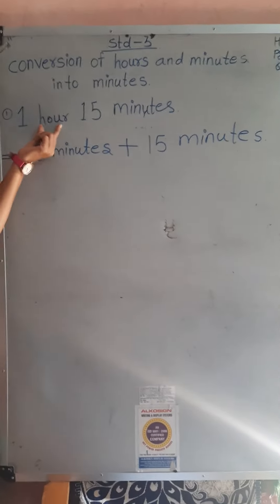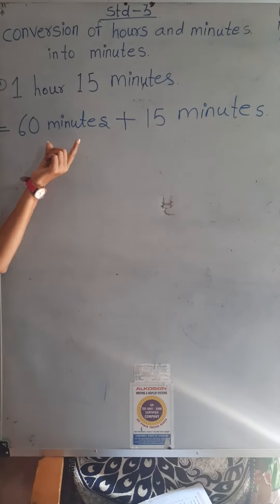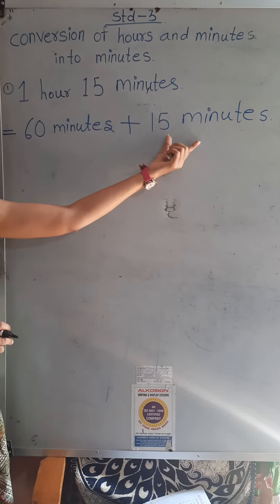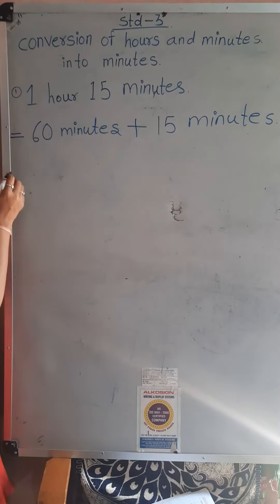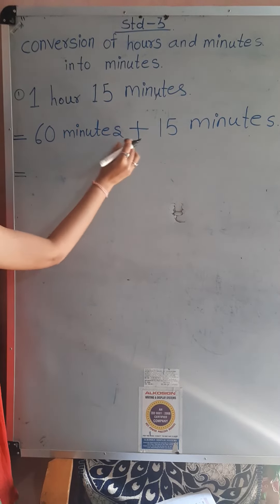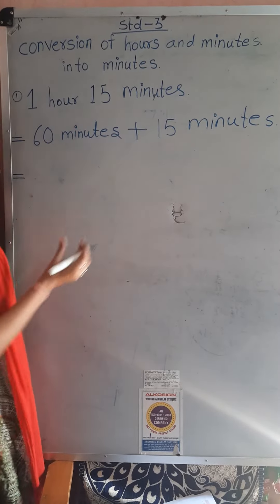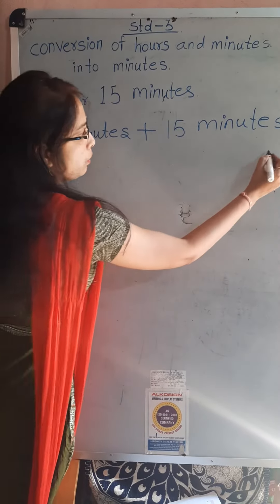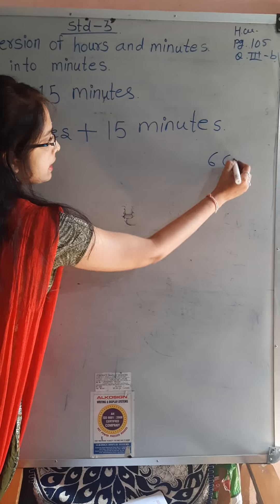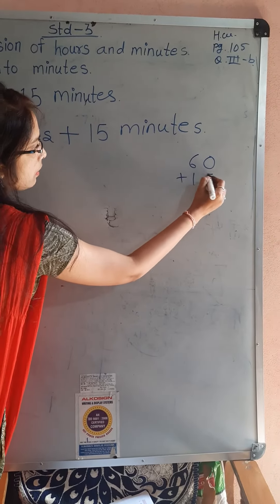Now we just convert that hours into minutes. So that both sides we find the minutes. Now just add that both minutes. 60 minutes plus 15 minutes is equal to how many? We just add. Look at here, 60 plus 15.